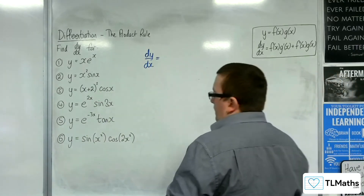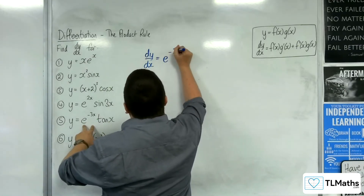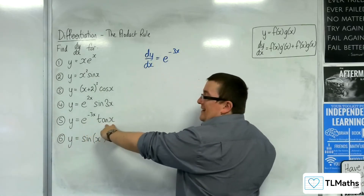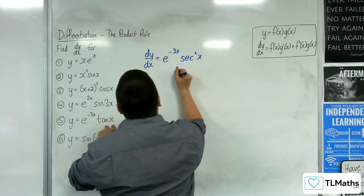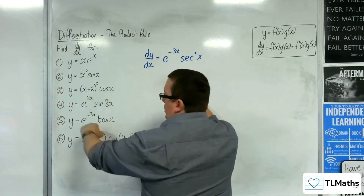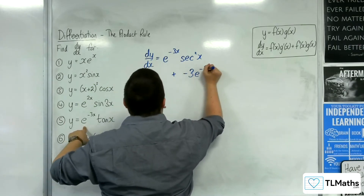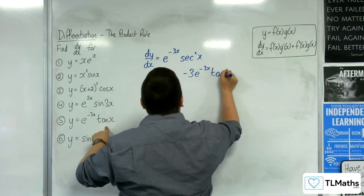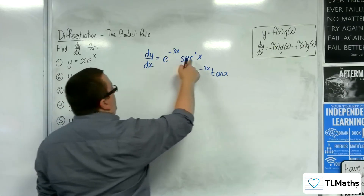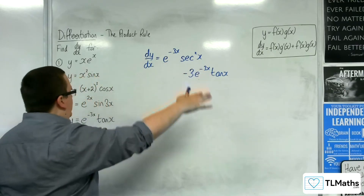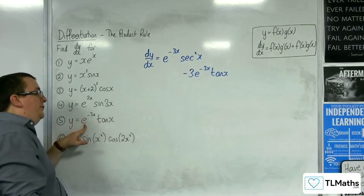Number five. We have e to the minus 3x — the first — times the derivative of the second. Now, tan x differentiates to sec squared x, plus the second times the derivative of the first, so negative 3e to the minus 3x tan x. So we've got e to the minus 3x sec squared x, take away 3e to the minus 3x tan x. The first times the derivative of the second, plus the second times the derivative of the first.